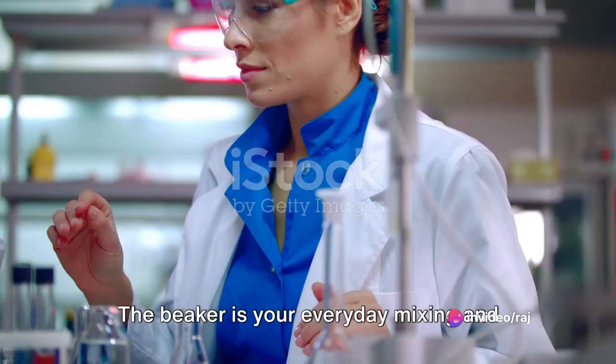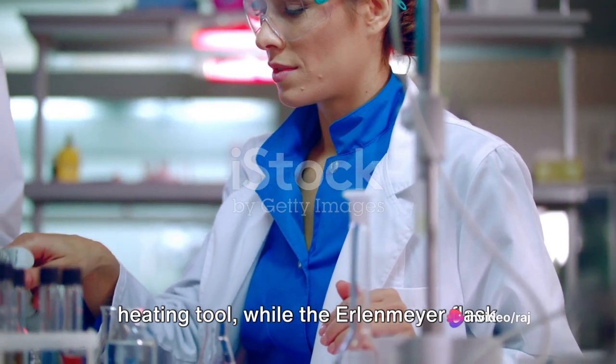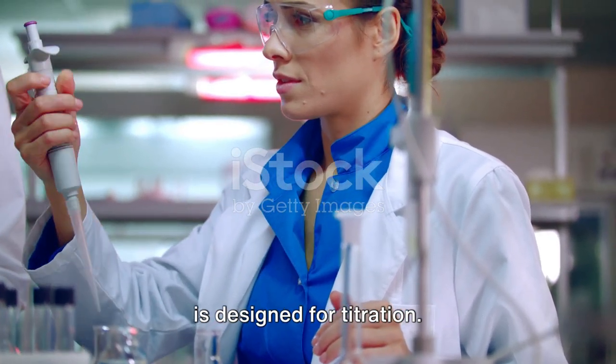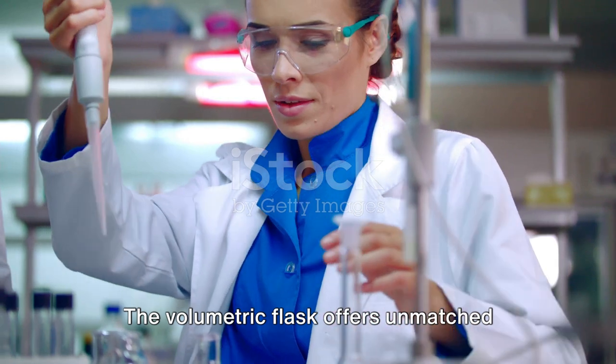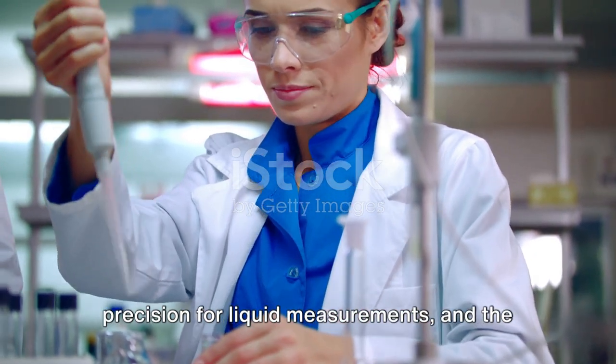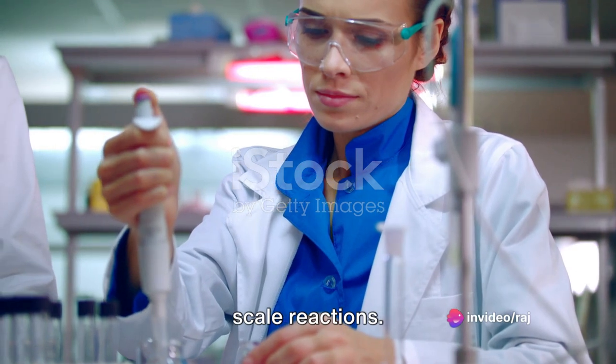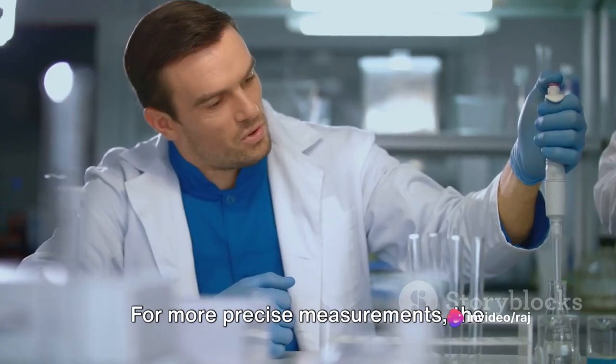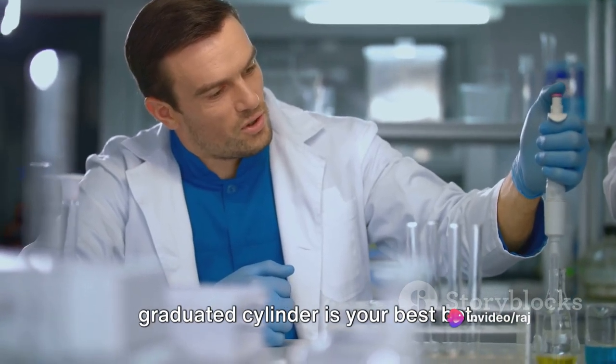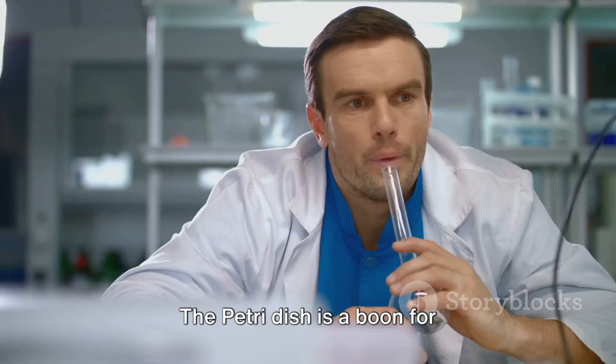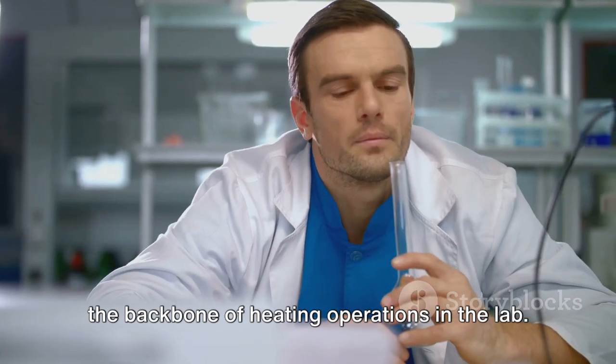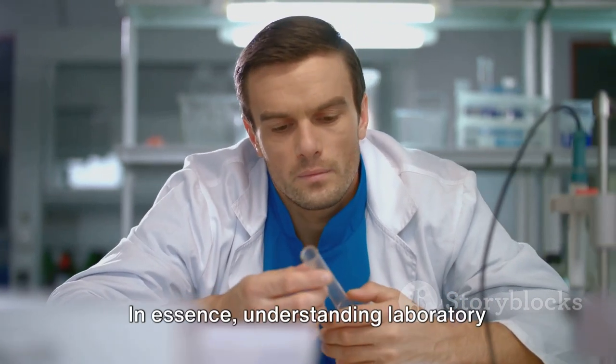The beaker is your everyday mixing and heating tool, while the Erlenmeyer flask is designed for titration. The volumetric flask offers unmatched precision for liquid measurements, and the test tube provides a safe space for small-scale reactions. For more precise measurements, the graduated cylinder is your best bet. The Petri dish is a boon for microbiologists, and the Bunsen burner is the backbone of heating operations in the lab.